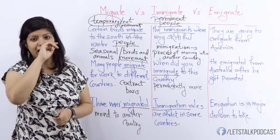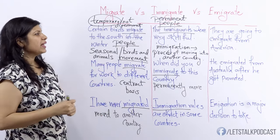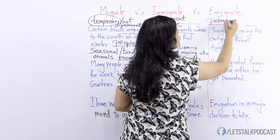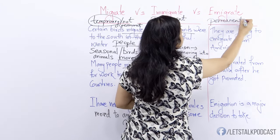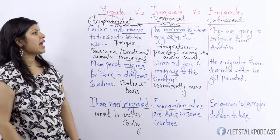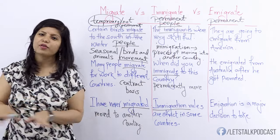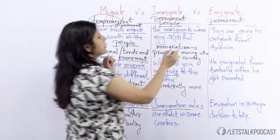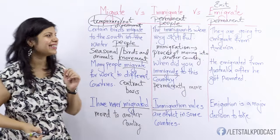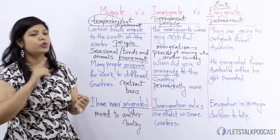And finally we have emigrate. So what is emigrate? Emigrate is also permanent, it's to do with people — no more birds and animals. And to emigrate means to move out, to exit out of a country. So remember: E for emigrate, E for exit. To emigrate is to permanently move out of your country, it's to do with people.